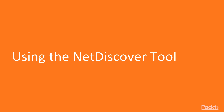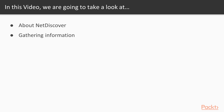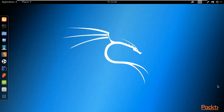Let's start with the first video of section 4: using the NetDiscover tool. In this video we are going to cover what NetDiscover is and how we can gather information using NetDiscover inside Kali Linux. You need to open up the Kali Linux operating system inside VMware Workstation. I'm here at Kali Linux and I'm going to show you how to use the NetDiscover tool for information gathering.